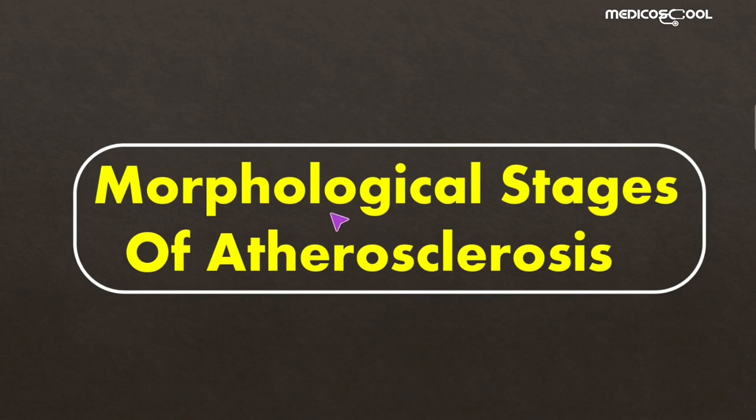Today we are going to study about the morphological stages of atherosclerosis. We have already studied about the etiology and pathogenesis of atherosclerosis, and today we are going to study about the morphological stages. Atherosclerosis starts with the formation of fatty streaks or dots.